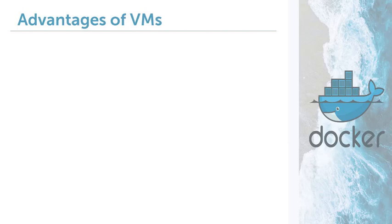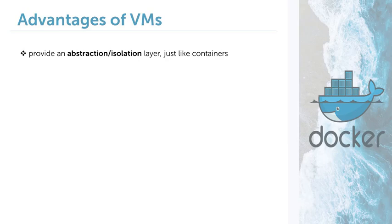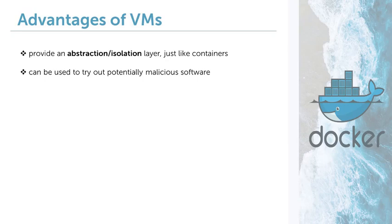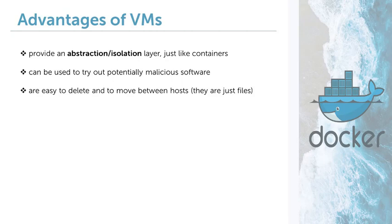Now that we understand how virtualization works, we can see what the main advantages of virtualization are. Virtualization provides an abstraction and isolation layer — what happens in a VM stays in a VM. That's why VMs are a popular way for trying out software which originates from a shady source, which might turn out to be malicious. In case the VM gets infected, just delete it — it's just a file on the hard disk of the host, and if it's running, it's just a process, so killing it is easy. This way, the harm done is greatly limited.